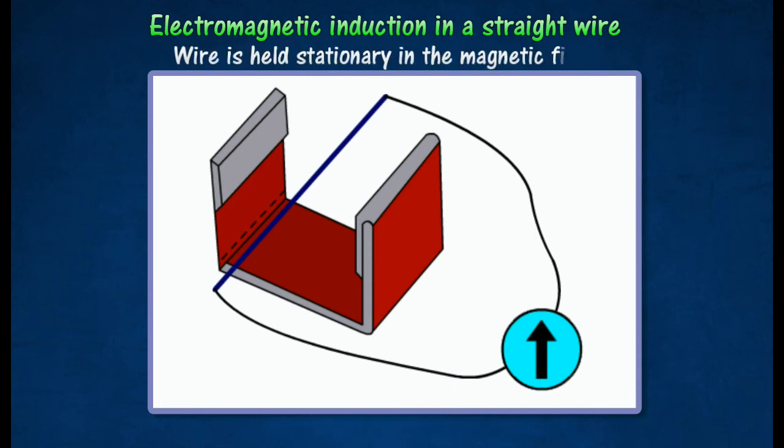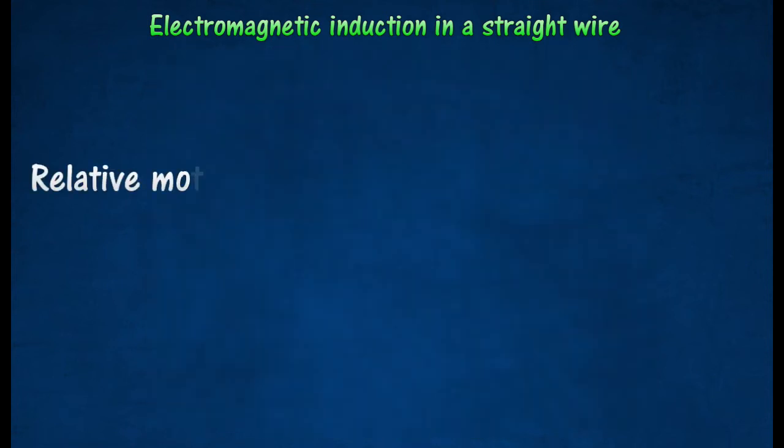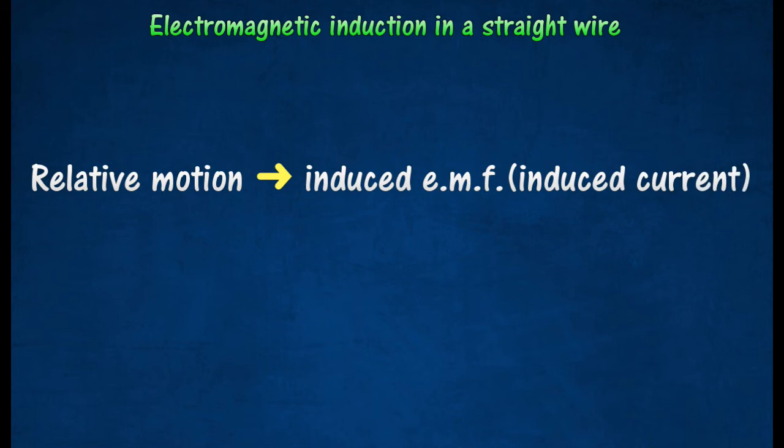If the wire is held stationary in the magnetic field, the galvanometer needle remains in the center as zero position, indicating that no current is induced in the wire. The observation of the experiment shows that current is induced in a straight wire when there is relative motion between the conductor and the magnet.